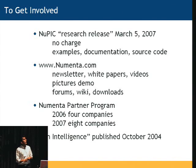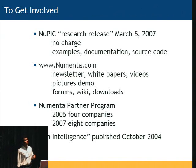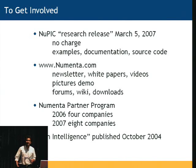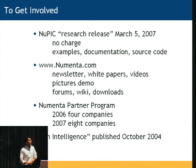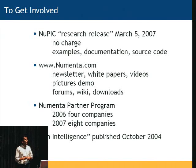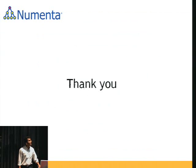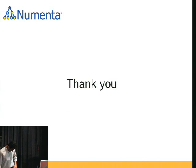Our strategy is to put out this platform — our NuPIC platform, Numenta Platform for Intelligent Computing — and let other developers come and develop interesting applications on our system. Someone who has data from, say, the automotive industry can take our system and model that data using it. That's our business model. If you want to get involved, we have good documentation on our website. Our current software is called Research Release because the algorithms are early versions. You can download our software, read our white papers, and you should definitely read On Intelligence — that's Jeff's book, where it all started. Thank you.